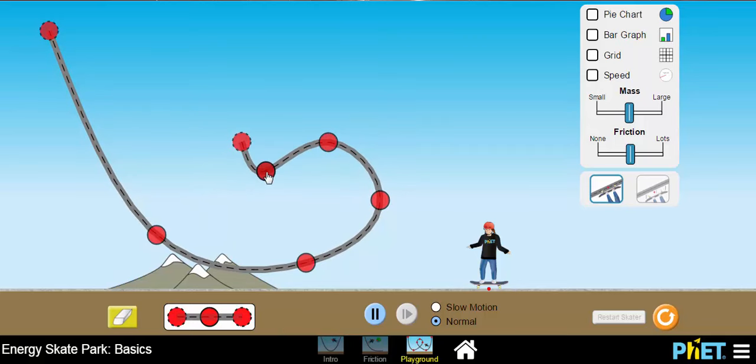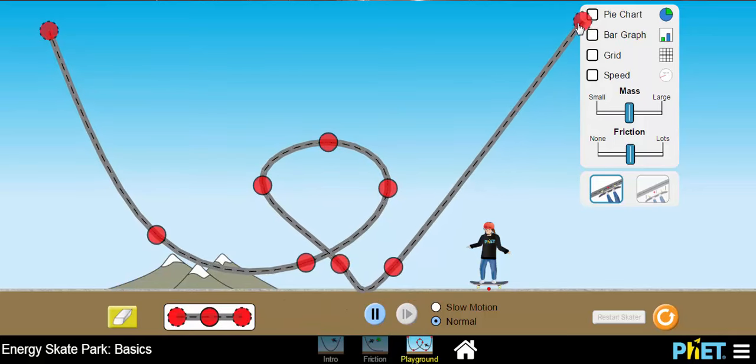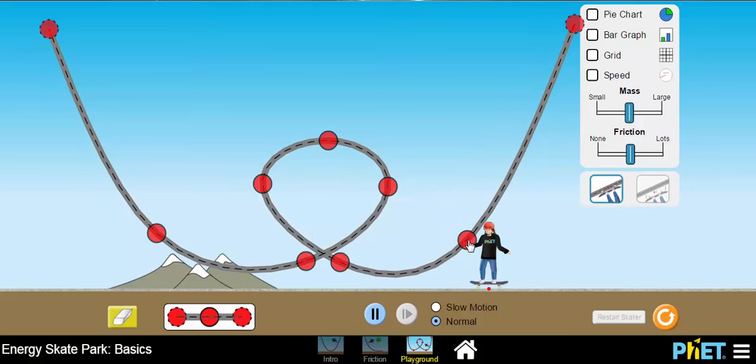But I need to create a loop here. So here's my loop starting to form. Hopefully you can kind of see what I'm doing here, but I'm going to need more track. Bring it in. You can kind of tweak it, change the shape of that loop a bit if you need to. And then we're going to get some more track in there. We'll keep stretching this thing out. That looks like that'll work for now.